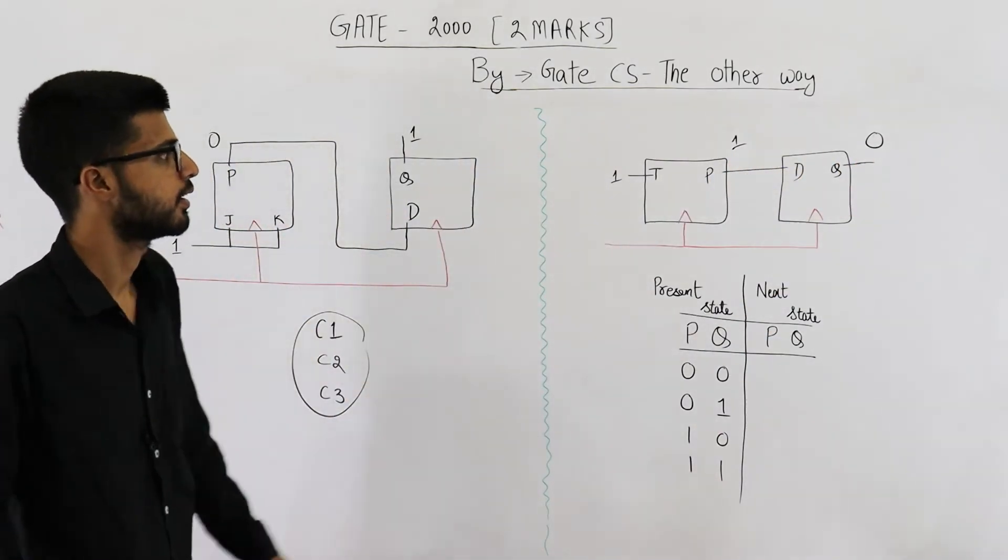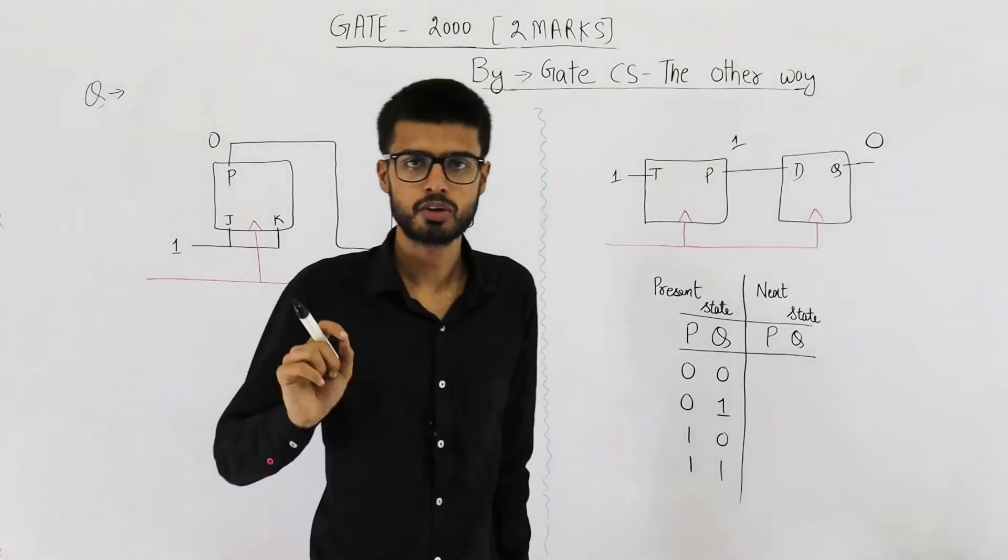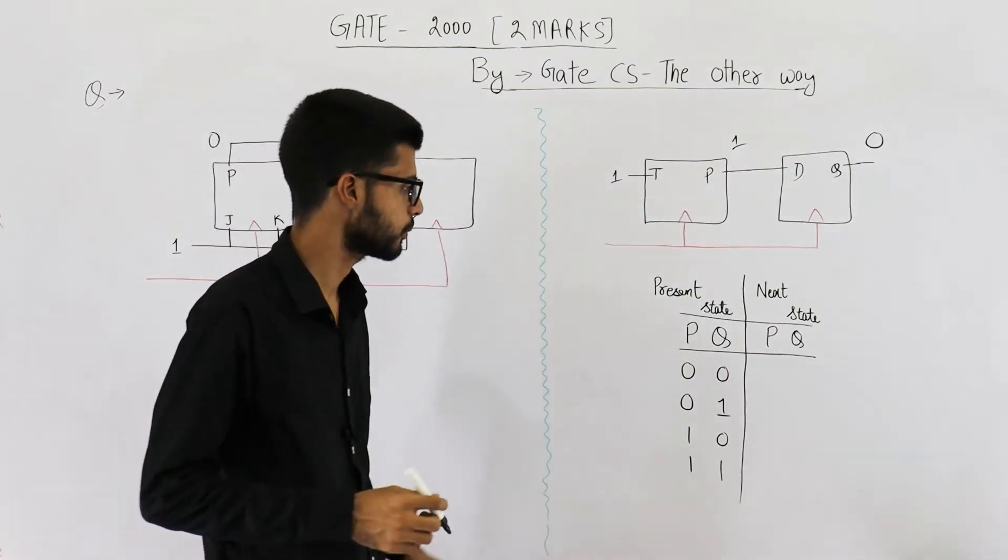So the final output will be one zero after three clocks. We have given three clock signals and the value is one zero. So your answer is one zero. You can see which option it is.